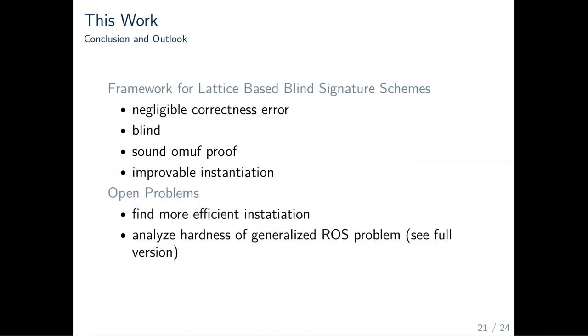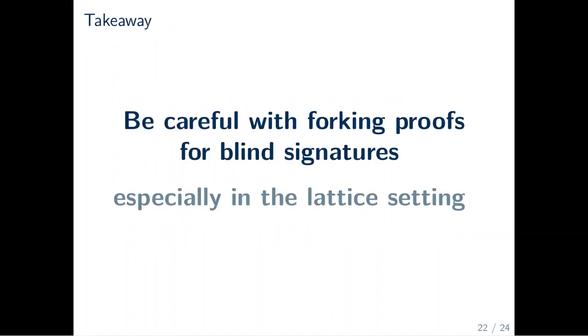To conclude, we give a modular framework for lattice-based blind signatures with negligible correctness error, sound blindness and OMUF proofs. However, the instantiation is quite improvable. So, as open problems we see a more efficient instantiation and also cryptanalysis of the generalized ROS problem. If there's something I want you to take away from this talk, it's the following. Take care with forking proofs for blind signatures. They turn out to be quite tricky, especially in the lattice setting.